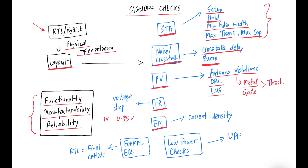The next category is EM or electromigration checks. Electromigration is a reliability issue where, over time, displacement of atoms in wires or routes can create opens and shorts. We need to ensure there are no EM violations, meaning all routes in our design must adhere to current density limits.